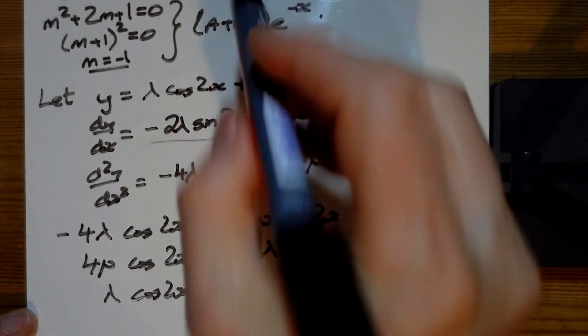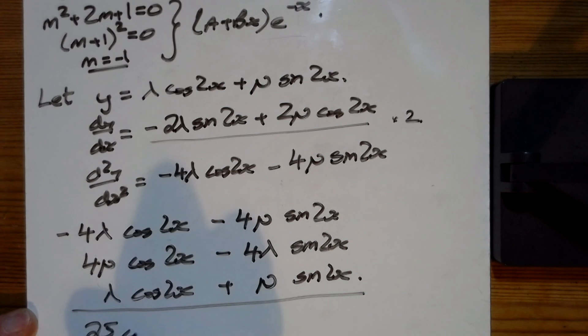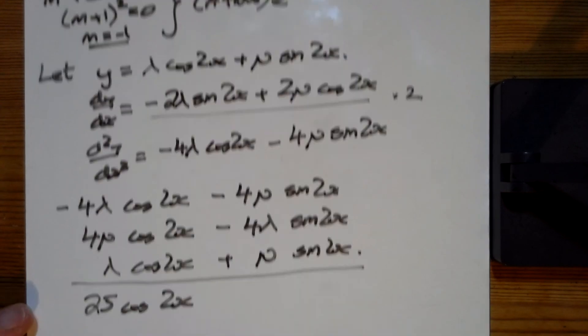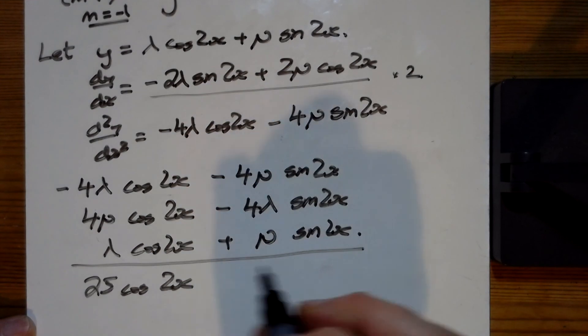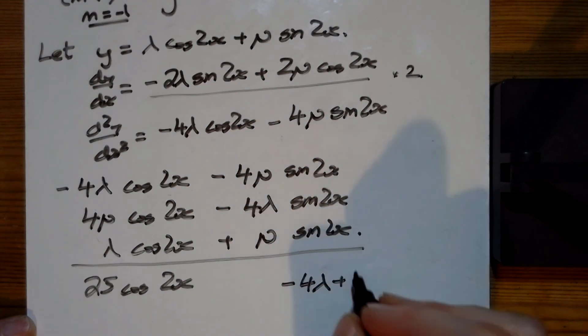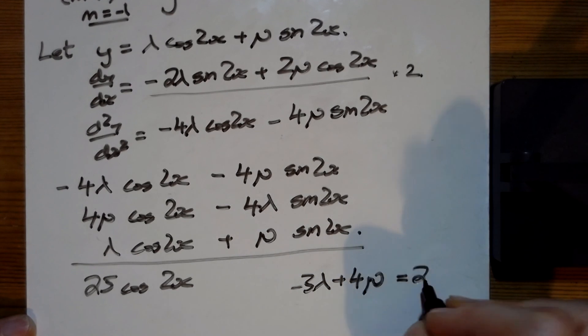When you put all of that together, it needs to equal 25cos(2x). For the cos(2x) part we've got -4λ + 4μ plus λ, so that makes -3λ + 4μ = 25 because we need 25cos(2x)'s.